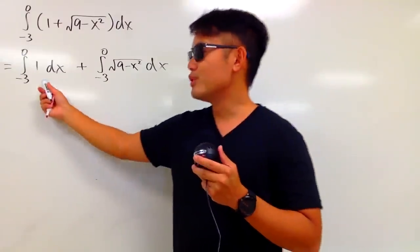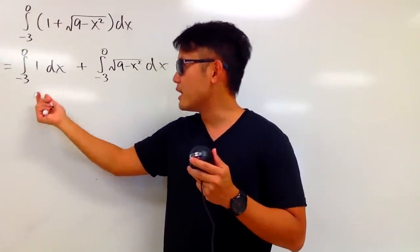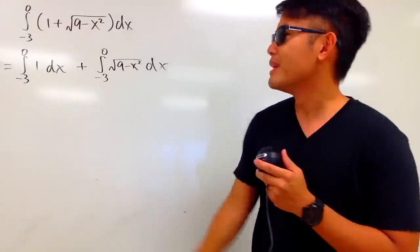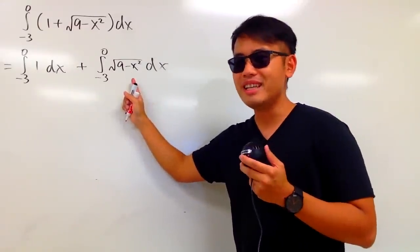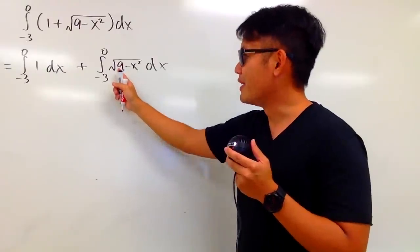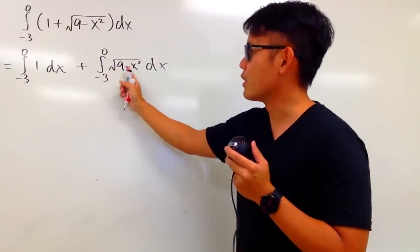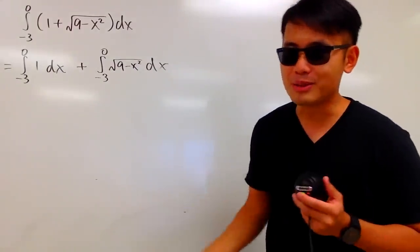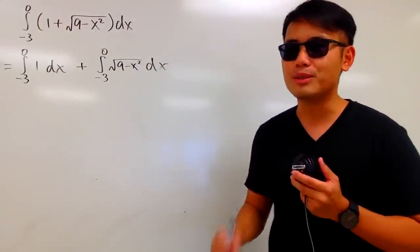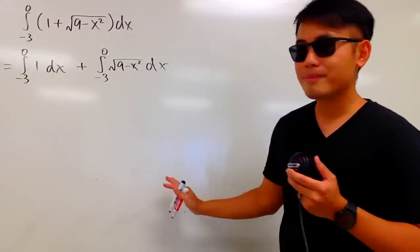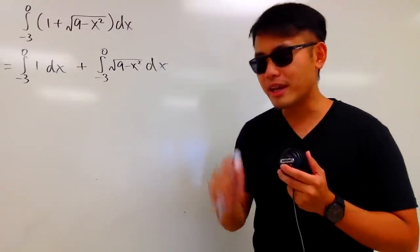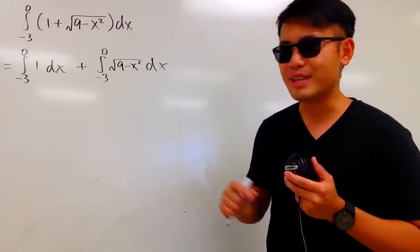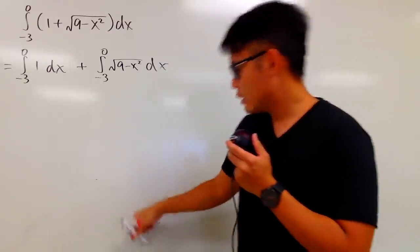If you want to, you can work this out by hand. You can find the antiderivative of 1 pretty easily. But it's not so easy to find the antiderivative of square root of 9 minus x squared — you would have to study Calculus 2, what we call trig substitution for that. But this is a special case; we can actually look at these two integrals with areas.